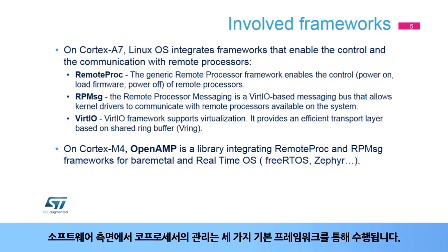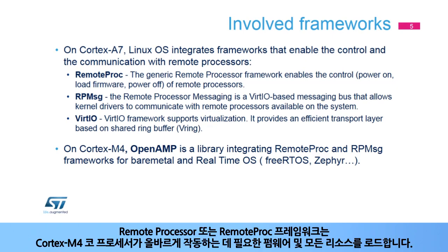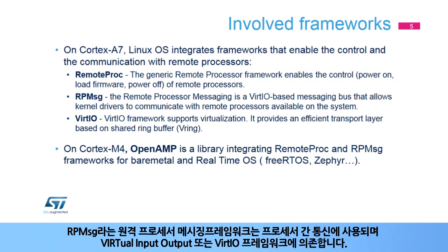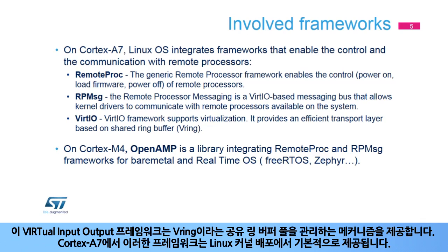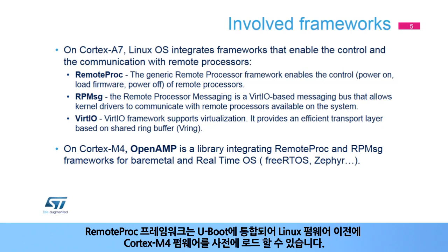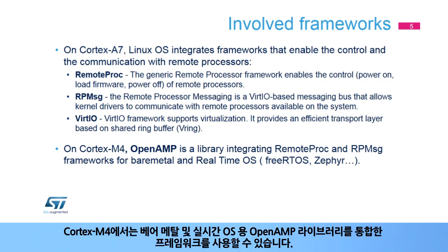In terms of software, the management of a coprocessor is done through three main frameworks. The Remote Processor, or Remote Proc, framework is responsible for loading the firmware and all resources required by the Cortex-M4 coprocessor to properly operate. The Remote Processor Messaging Framework, named RPMSG, is used for the interprocessor communication and relies on the Virtual Input-Output, or VIRT-IO, framework. This Virtual Input-Output framework provides a mechanism to manage the shared ring buffer pool, named V-Ring. On Cortex-A7, these frameworks are native in the Linux kernel distribution. The Remote Proc framework is also integrated in U-Boot, allowing the preload of the Cortex-M4 firmware before the Linux firmware. On Cortex-M4, the frameworks are available by integrating the OpenAMP library for bare-metal and real-time OS.